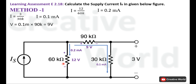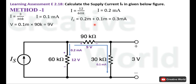Label both currents with their values. At this node, two currents are leaving: one is 0.1 milliampere and the other is 0.2 milliampere. Only one current is entering this node, which is Is. So Is equals the sum of these two currents: 0.2 milliampere plus 0.1 milliampere equals 0.3 milliampere. The value of Is is 0.3 milliampere.